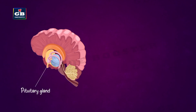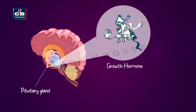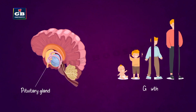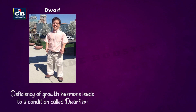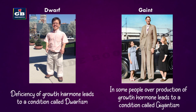Growth hormone, secreted by the pituitary gland, is responsible for the regular growth of our body. The growth of skeletal muscles and bones is under the control of growth hormone. Deficiency of growth hormone leads to a condition called dwarfism, where stunted growth is observed, while overproduction leads to a condition called gigantism, where people grow very tall and look unusual.